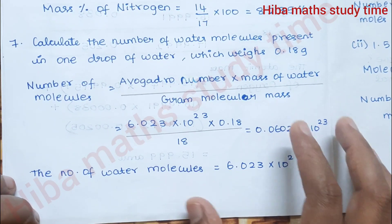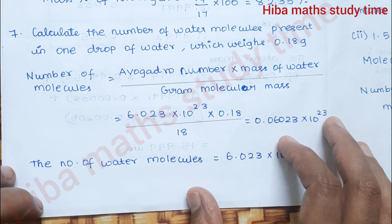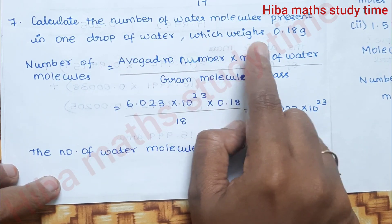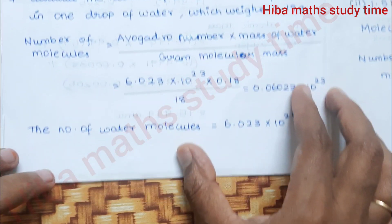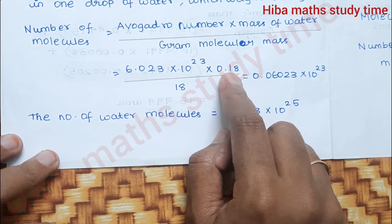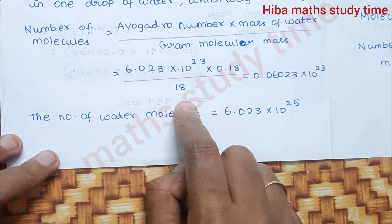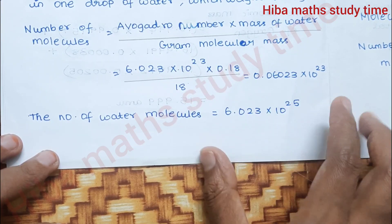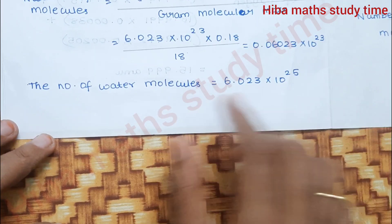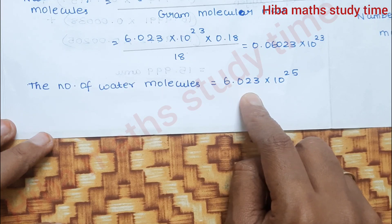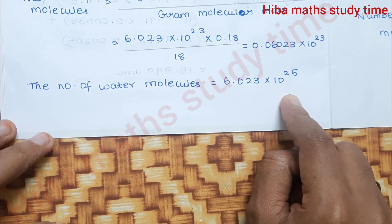Seventh question: Calculate the number of water molecules present in one drop of water which weighs 0.18 grams. The number of water molecules is equal to 6.023 × 10²⁵.